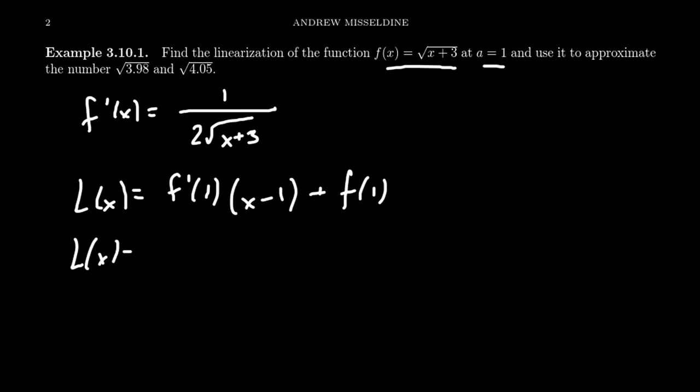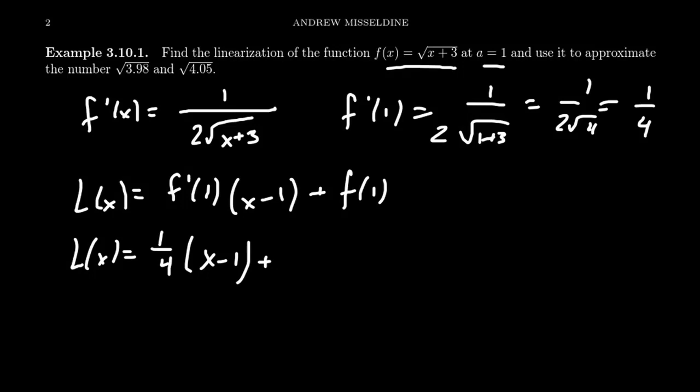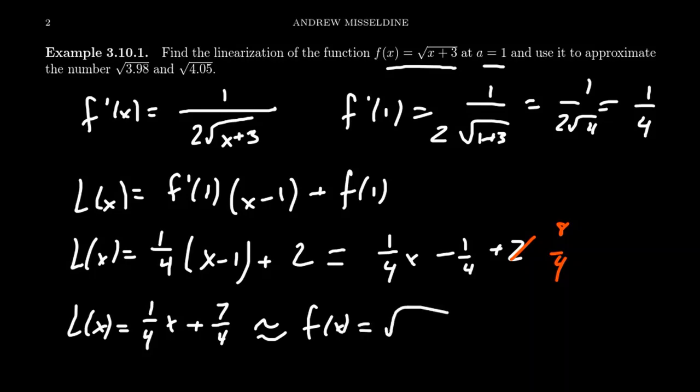To get the linearization, the derivative evaluated at one: f prime at one, we get one over two times the square root of one plus three. We're going to get one over two times the square root of four. Square root of four, of course, is two. So you get one fourth as the slope of the tangent line at this point. Then we're going to get x minus one. And then the last thing to do is evaluate the function at one. This function is going to be the square root of four, which is two. I am going to simplify this and put it in slope intercept form. We get one fourth x minus one fourth plus two, which instead of two, we'll think of it more as eight fourths. And so our linearization is then equal to one fourth x plus seven fourths. And so our claim is that this function will be approximately the same thing as f of x, which as we saw above is the square root of x plus three when x is close to one.